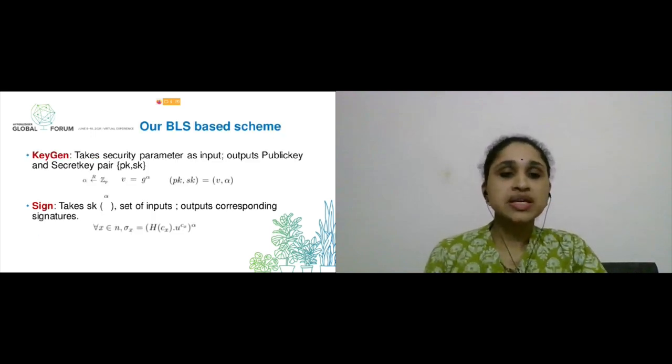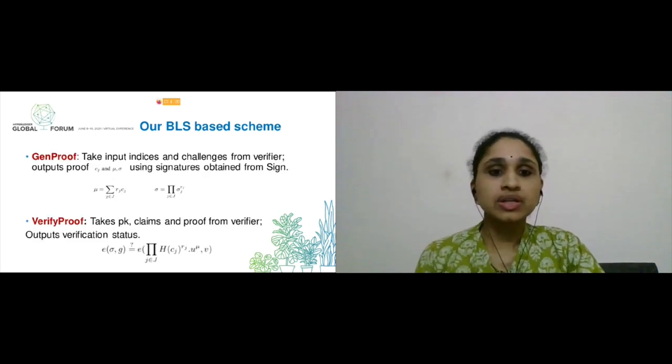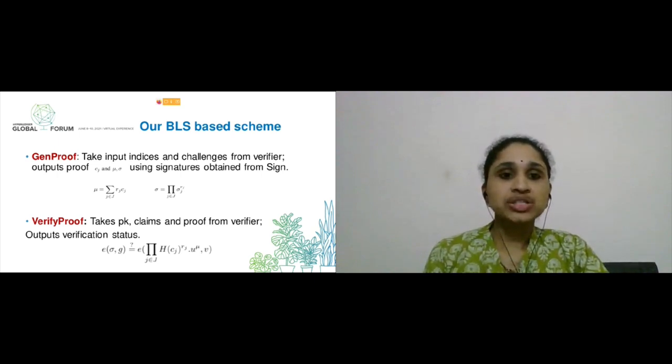Our BLS-based scheme has four main functions. One is the key generation function. It takes security parameter as input and outputs a public and private key pair. Second is the signature function. This function takes a private key and set of inputs and outputs signatures corresponding to the inputs. This is used to sign a message with a private key. Third is the proof generation function which is run by some prover. This function takes some challenges from the verifier and outputs a proof. This proof is computed using signatures from previous step and also from the information that user has. Next is the verify proof function. This function verifies the proof sent by the prover using public key.